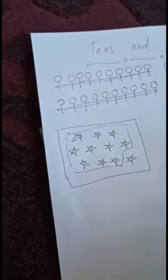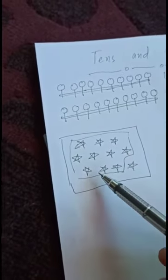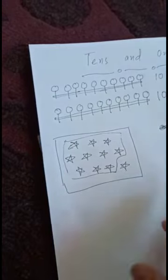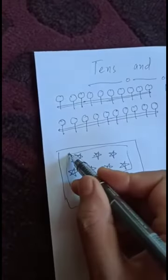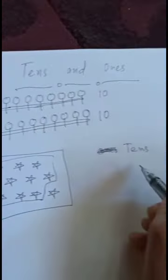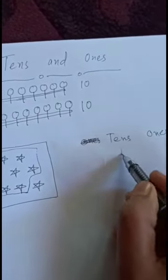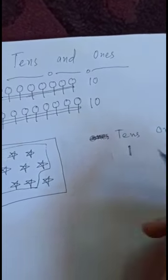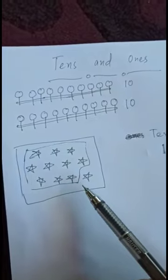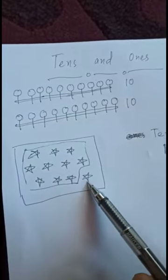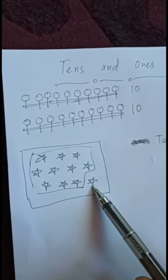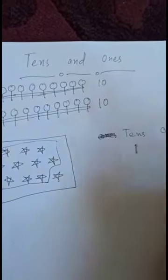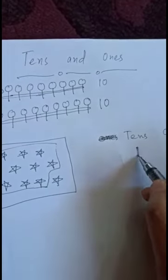We have one group of ten. Kyunki ekhi ten hai humare paas, to kitne groups ban gaye? One group — that is one ten. Baaki kitne bache? One remaining star is one. That means one ten and one one.